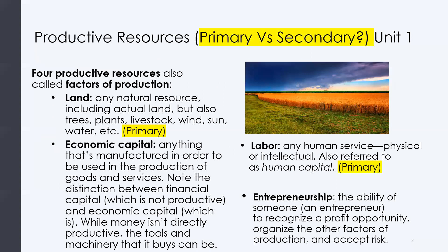There are four key resources in economics — some textbooks say five, but there are four key ones. These resources are called productive resources or factors of production. The reason they're called factors of production is that they are used within the production process. For you to get a car or a house, you need to use resources in the production process.